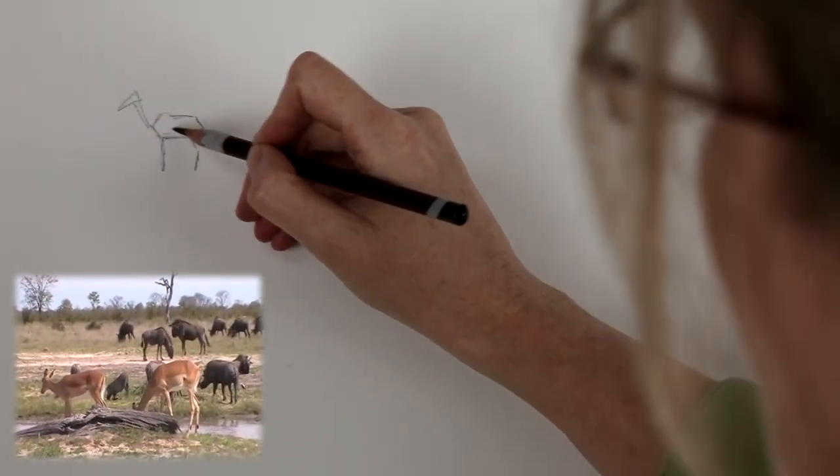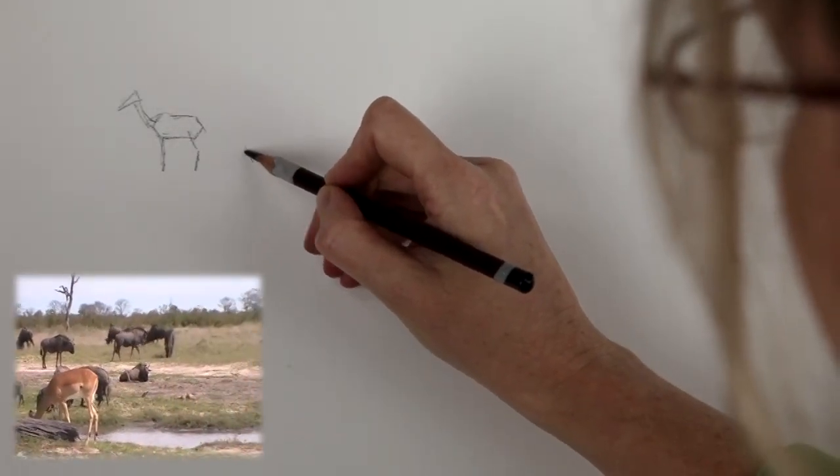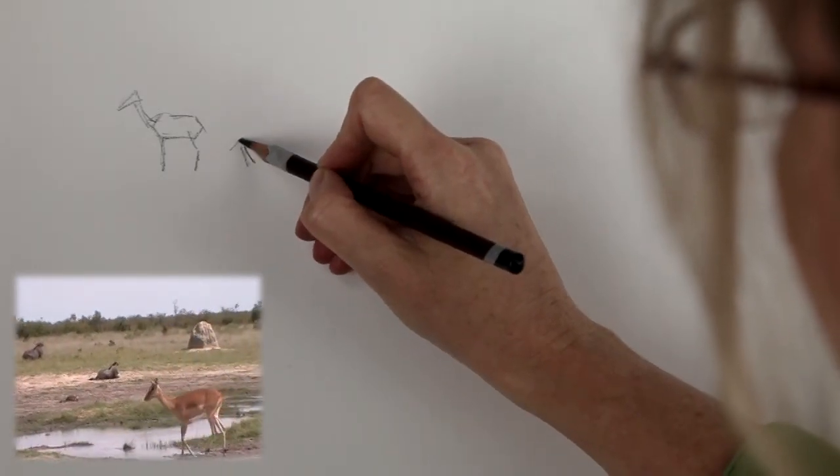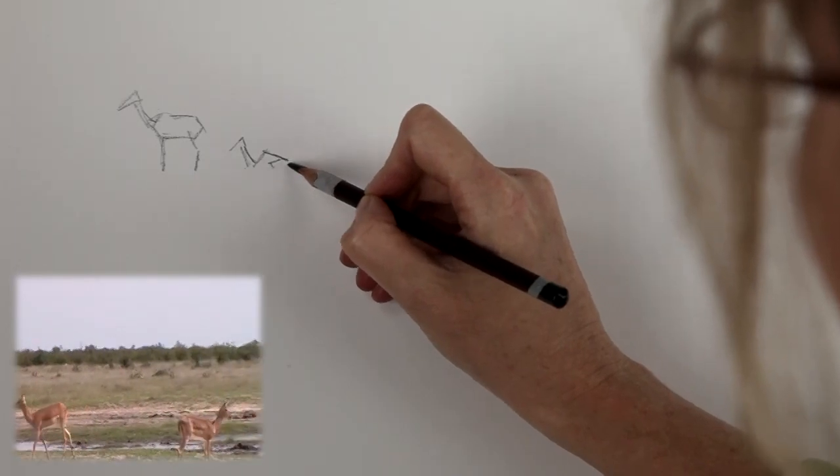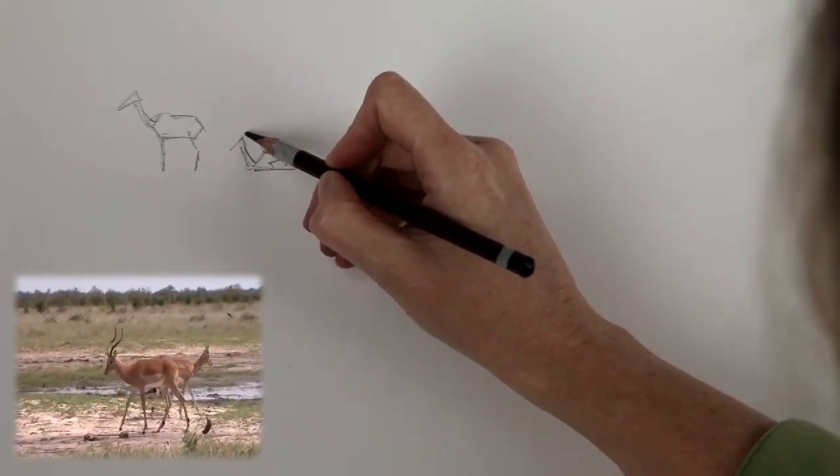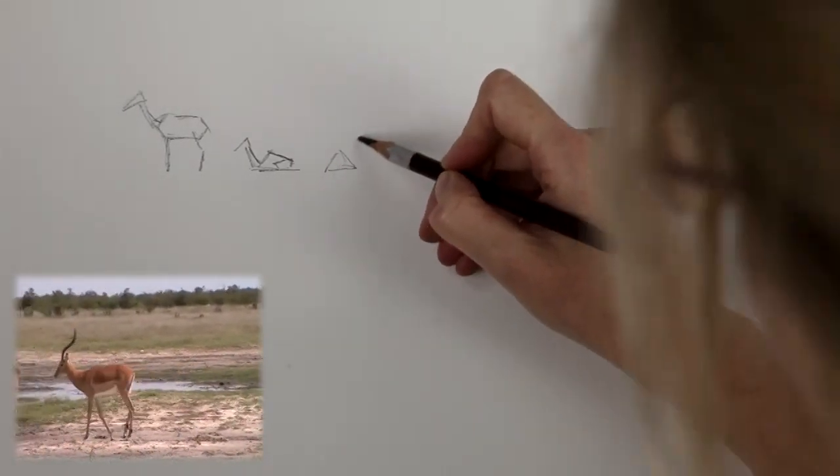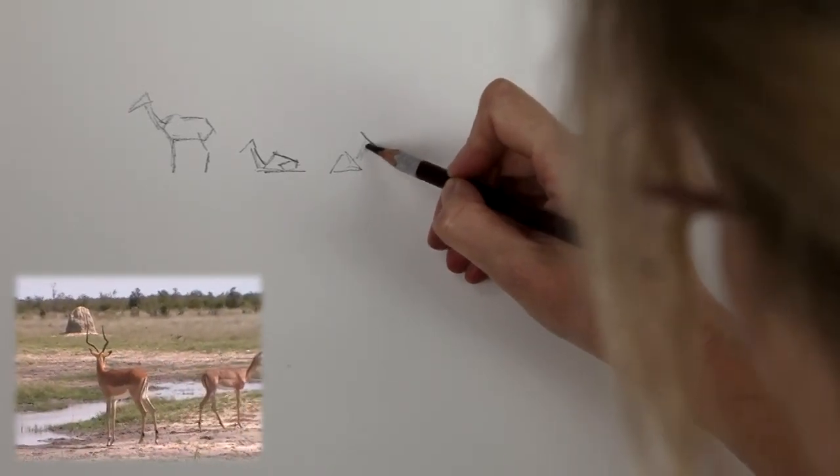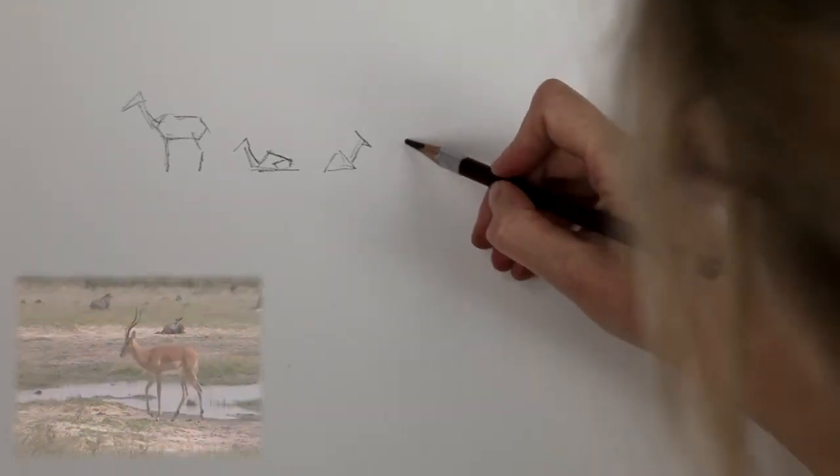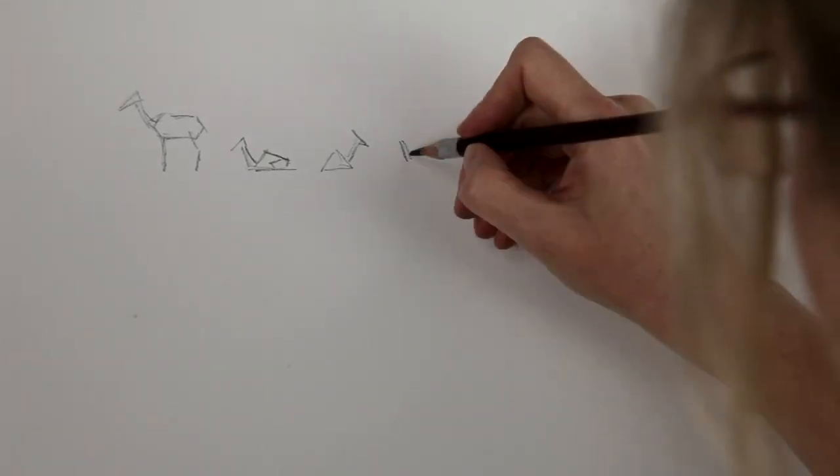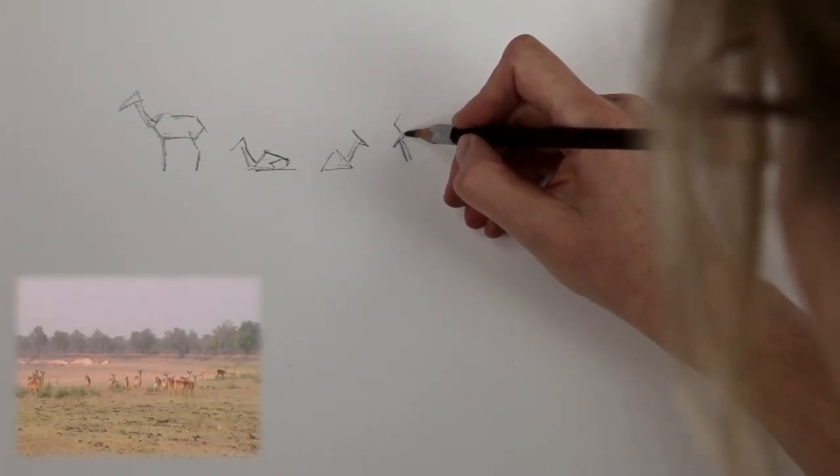I'm going to do quite a lot of these because we've got a herd of them. Some of them might be sitting down. So again you're looking at straight lines and the various shapes that make up that animal. These are very small diagrams but actually it's surprising what you can do from a small diagram. Let's give this one some horns.